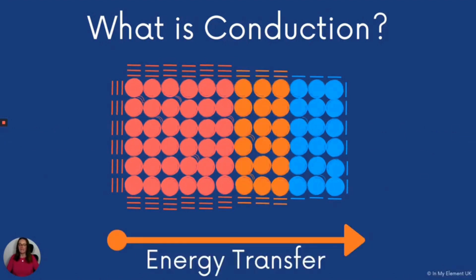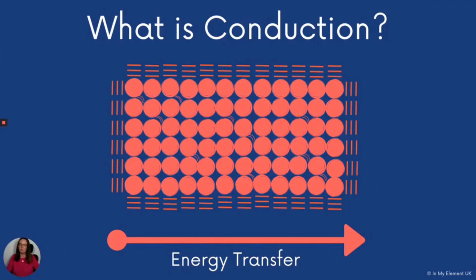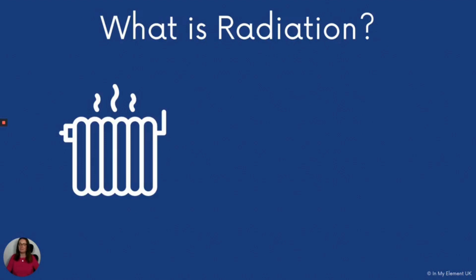If you take a look here, you've got three different colors representing this. The orange circles represent the particles that have gained some energy from the hotter particles on the left-hand side — they are vibrating more than the blue particles. The next stage is that the whole object has become hot through conduction because the heat energy has been transferred throughout.